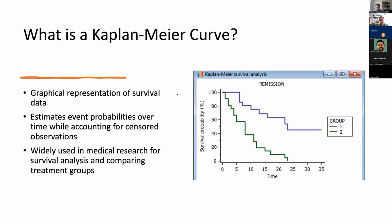What is a Kaplan-Meier curve? It is a graphical representation of survival data. It estimates event probabilities over time while accounting for censored observations, and it is widely used in medical research for survival analysis and comparing treatment groups.